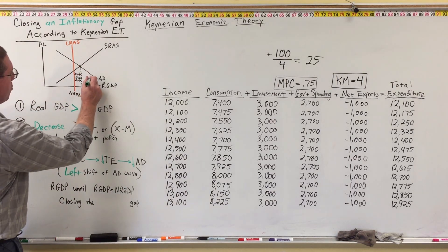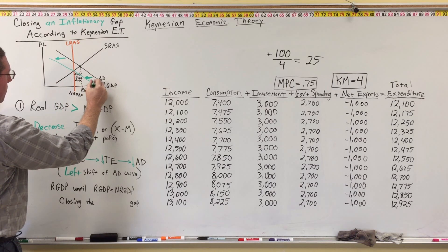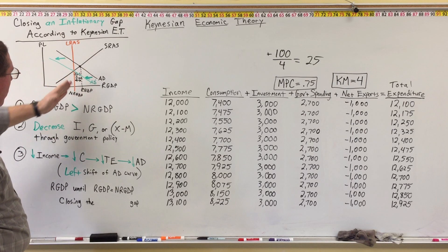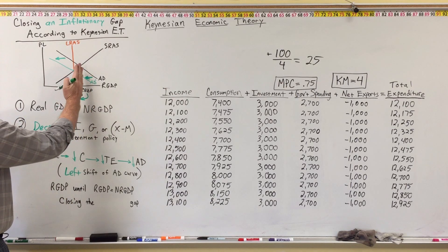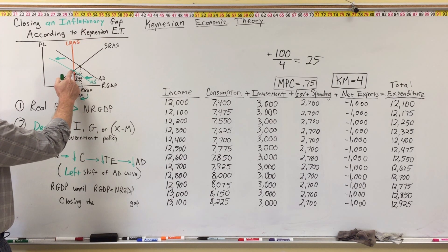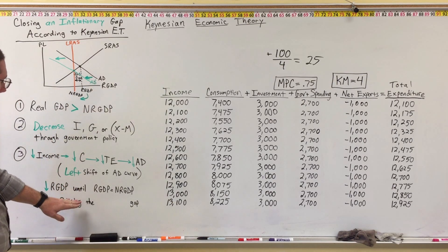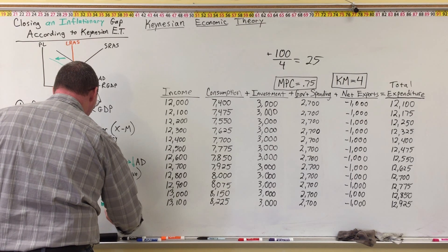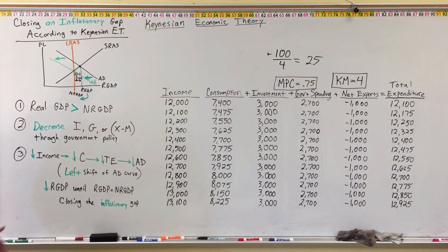When income goes down, that leads to a decrease in consumption, and a decrease in consumption leads to a decrease in total expenditures. A decrease in total expenditures results in a decrease in aggregate demand and a left shift of the aggregate demand curve. The new aggregate demand curve, AD prime, will shift left until it intersects short-run aggregate supply at the long-run aggregate supply curve. Real GDP will decrease until real GDP is equal to natural real GDP, closing the inflationary gap. The economy is now in long-run equilibrium with no more inflationary gap.